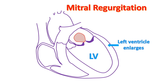In the long run, the left ventricle starts failing due to the overload in case of severe mitral regurgitation. When the left ventricle fails, the pressure in the chamber when it relaxes increases and is transmitted back to the left atrium.